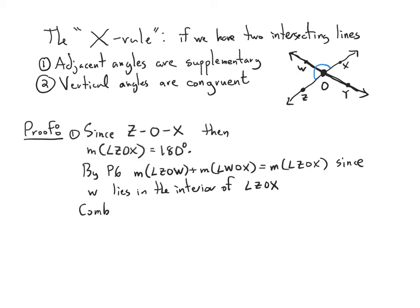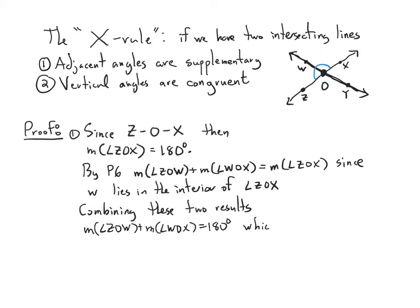Combining these two results: the measure of ZOX equals 180, and the measure of ZOW plus the measure of WOX equals the measure of ZOX. We know that's 180. So the measure of ZOW plus the measure of WOX equals 180 degrees, which means these angles are supplementary by definition.